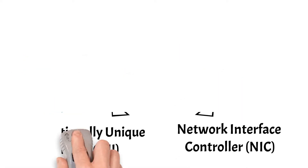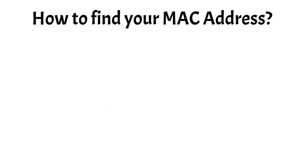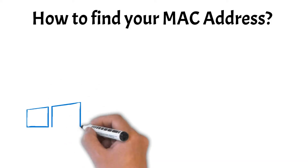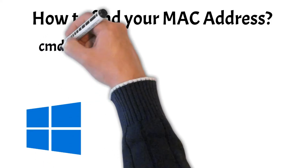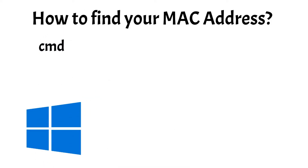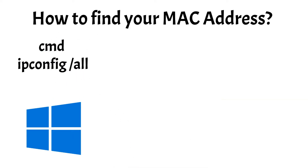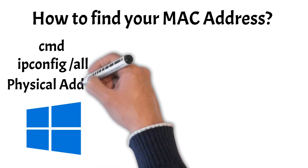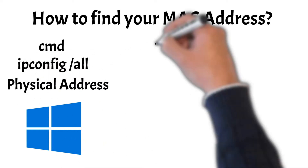Now let's quickly take a look at how to find your MAC address on various systems. On Windows, open the command prompt by typing cmd in the search box and then enter ipconfig /all. This command will display detailed information about your system. Look for the physical address under your network adapter — this is your MAC address.